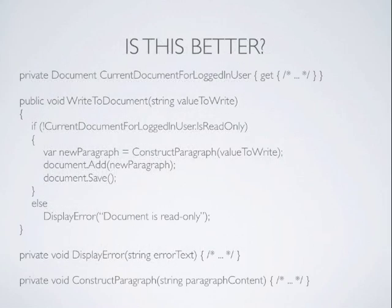So we abstract out each of these steps into their own functions. We have a private getter for the current document for the logged-in user, which has its own logic internally but logic not needed by write-to-document. This function just wants to know: is it read-only? I'm going to write to it or display an error. Constructing the paragraph is another function's responsibility — this just needs to get that paragraph from the string and add it to the document. And displaying the error should never be this function's concern: something else handles that, so now we can use this in other applications with other user interfaces and change the implementation of display-error without touching write-to-document.